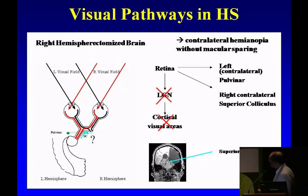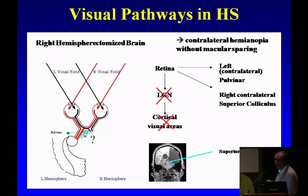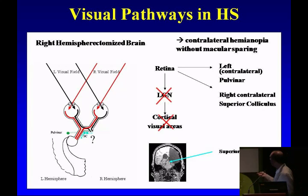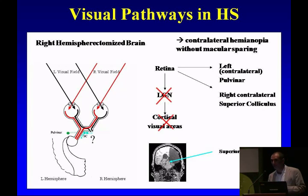In the visual pathways of hemispherectomy subjects, for example when the right hemisphere is removed, there is blindness in the left visual field. But there are pathways from the retina to the contralateral pulvinar and also the superior colliculus. If we observe visual abilities using the properties of collicular and pulvinar cells and compare the responses, we may be able to establish the neural mechanism of blindsight, at least in hemispherectomy subjects.